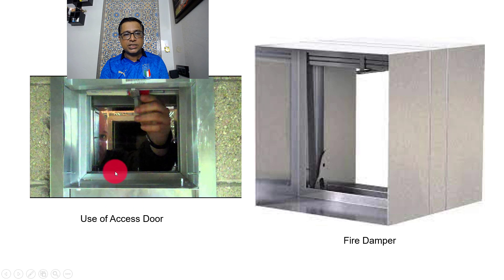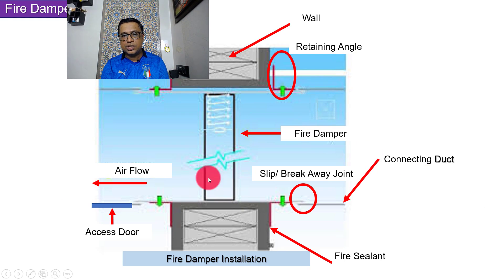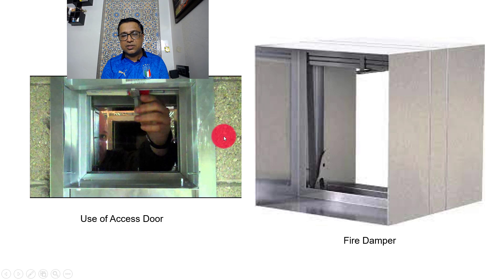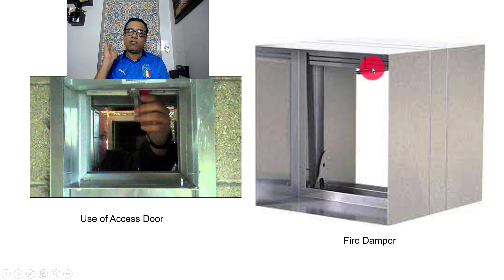From the access door, you can access the fusible link if there is an issue. This is a real fire damper — this is the head, and this is the curtain which goes inside. This is the fusible link, this is the sleeve, and the fire damper is inside. This has to be aligned with the firewall — that is very critical.